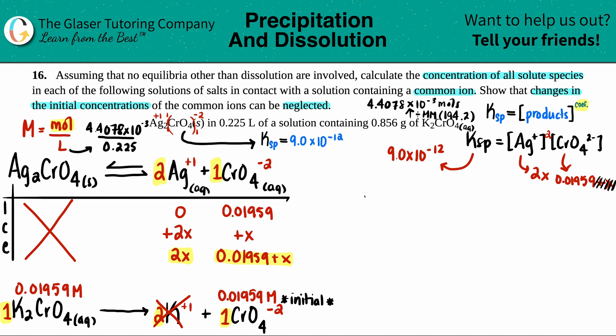We do a check at the end with the five percent rule, but let's do the math. 9.0 times 10 to the negative 12th equals 2x squared and 0.01959. 2x squared is 4x squared in total. Let's times the 4 by this number.